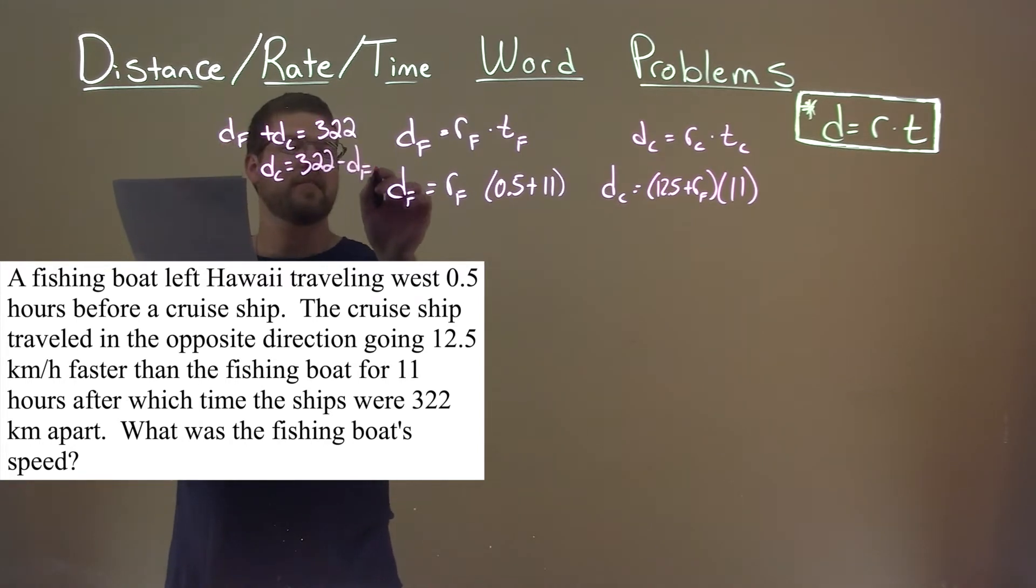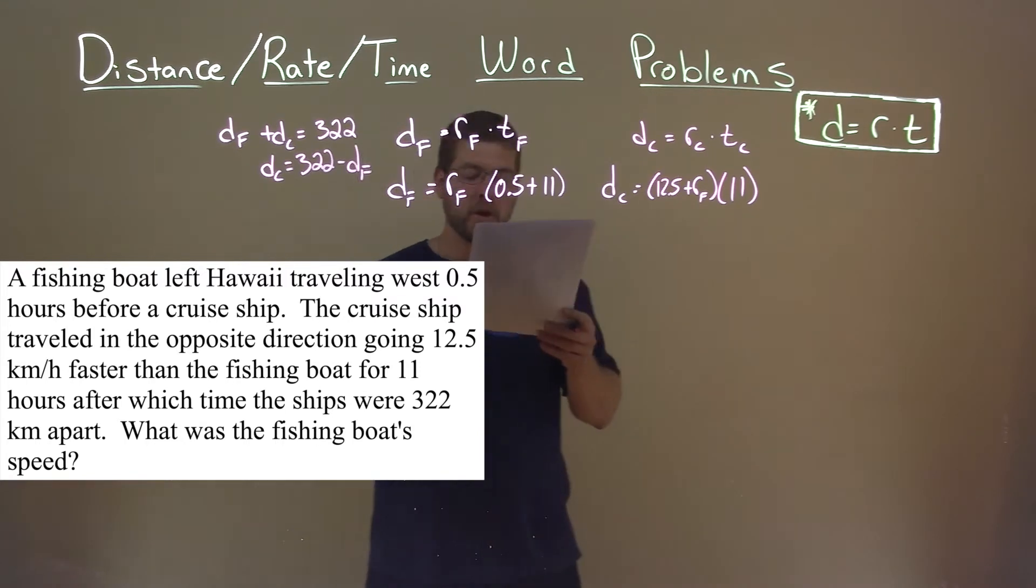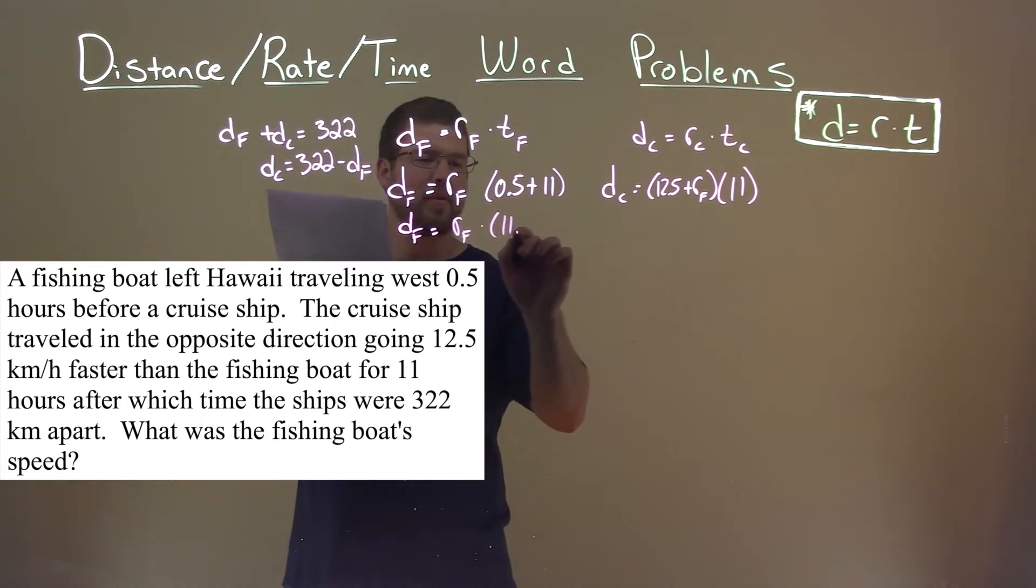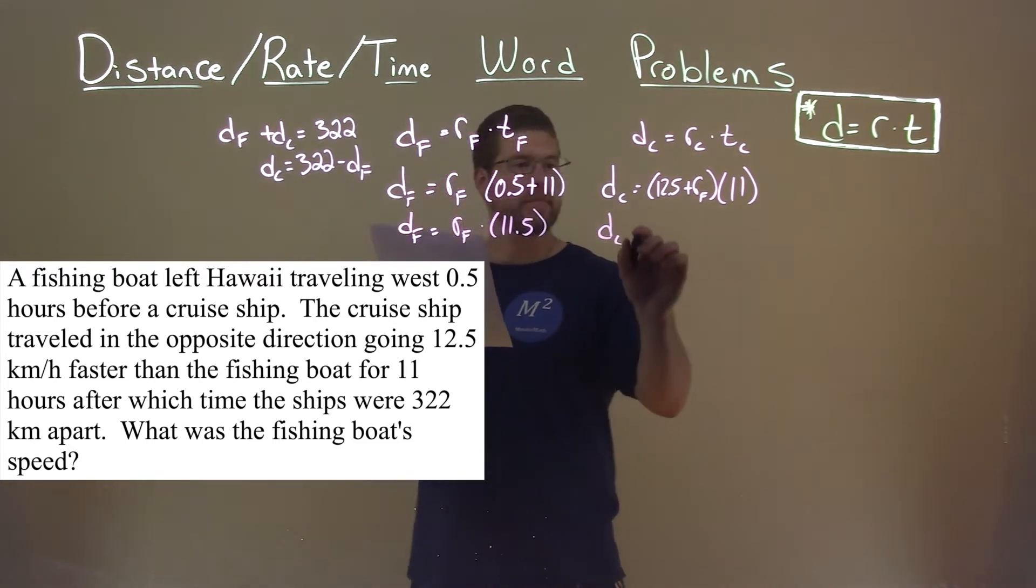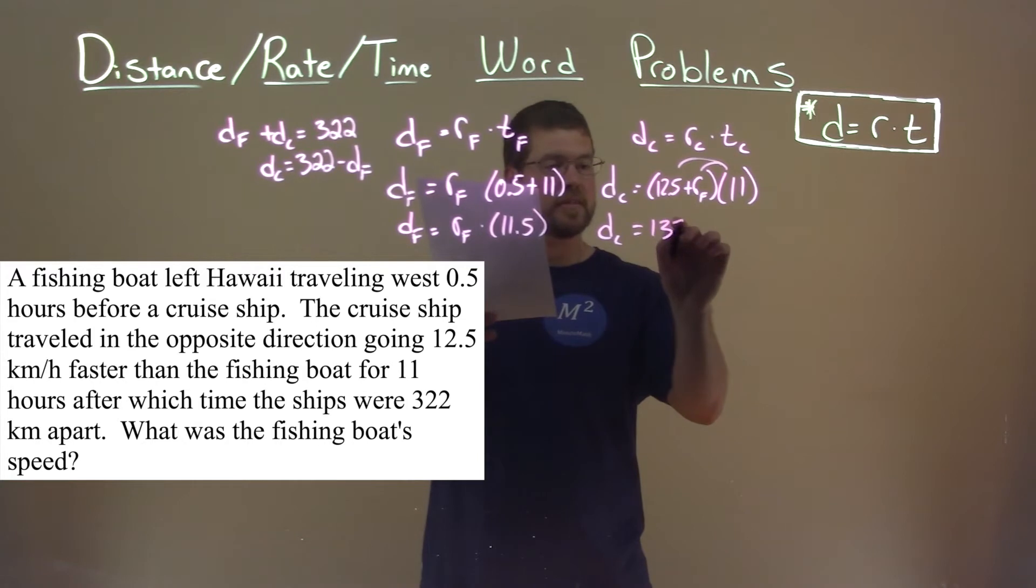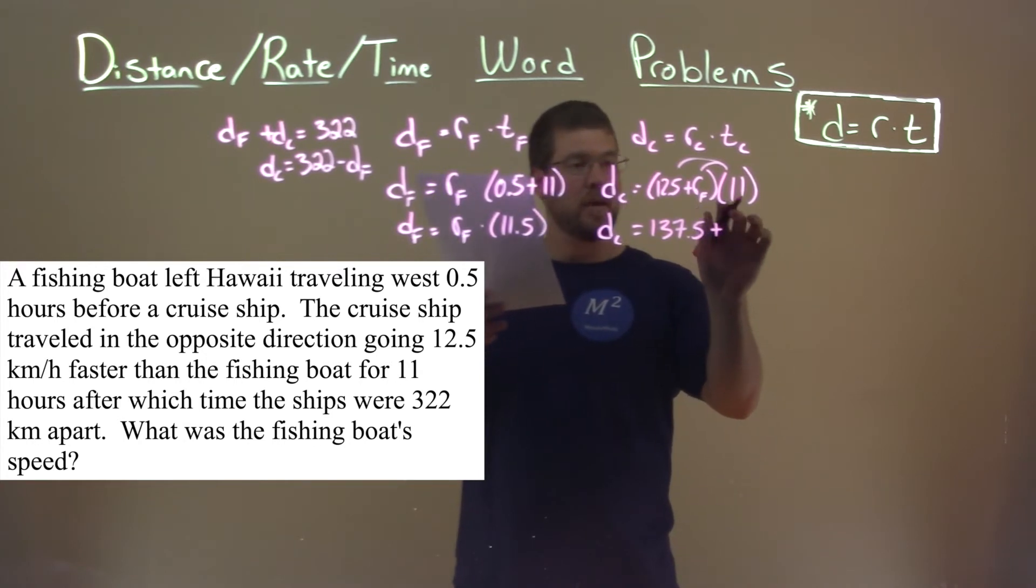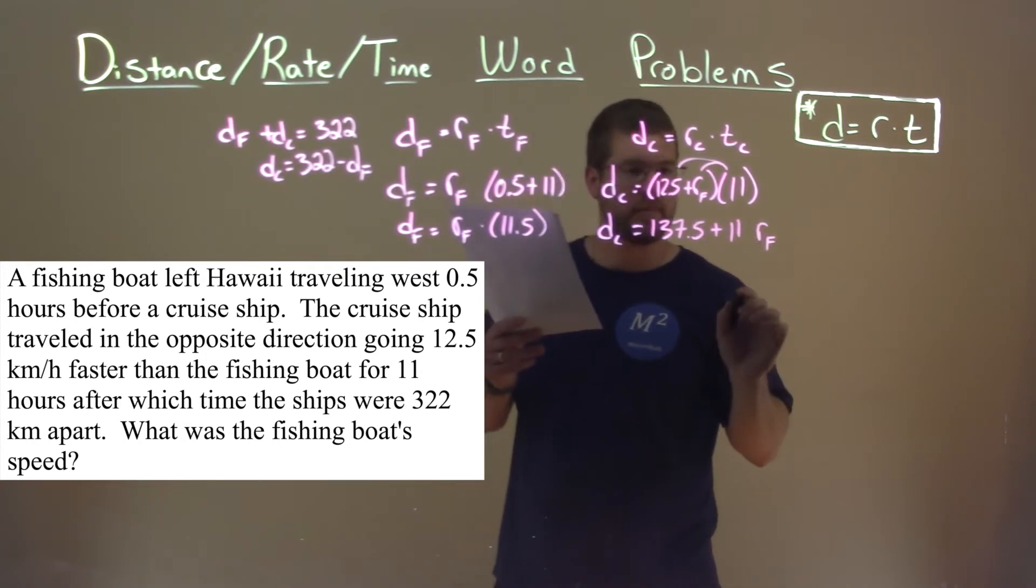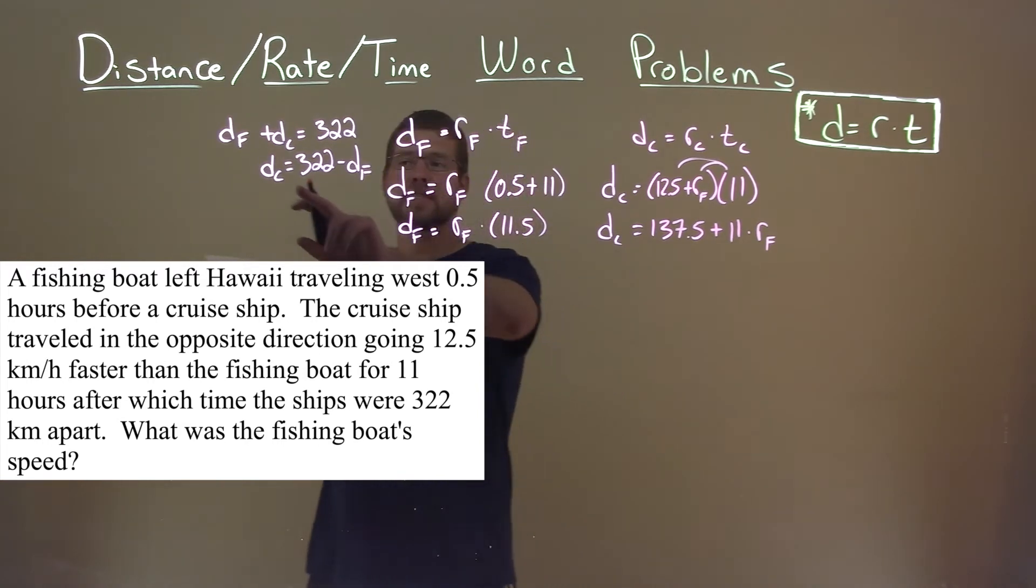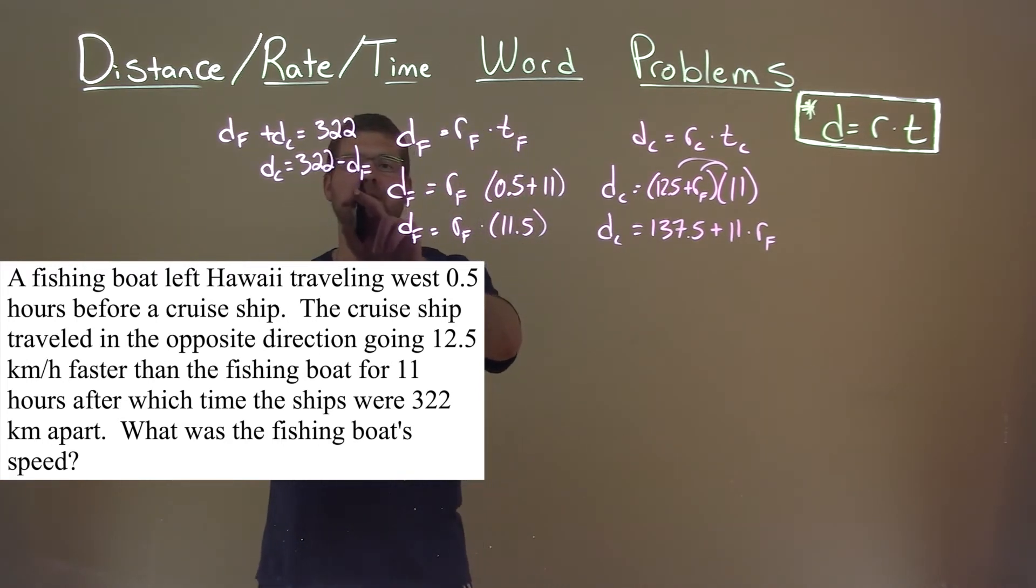We're almost there, minus the distance of the fishing boat. So now what we're going to do, let's simplify what we can a little bit here. I can simplify some of this stuff out. D sub F is equal to R sub F times 0.5 plus 11, which is 11.5. Not too much going on there. Distance of the cruise ship, if we distribute the 11 across here, 11 times 12.5 is 137.5 plus 11 R sub F, the rate of the fishing boat. Well, we found D sub C is equal to 322 minus D sub F.